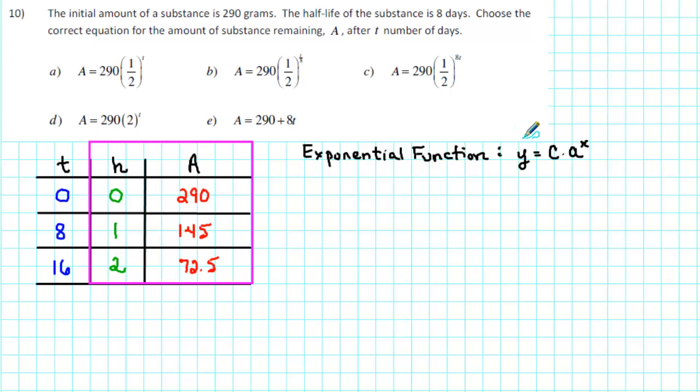An exponential function has the form Y equals C times A to the X, where C is the initial quantity, and A is either the growth or the decay factor. In our case, the initial amount is 290, and the decay factor is 1 half. So A equals 290 times 1 half to the H.